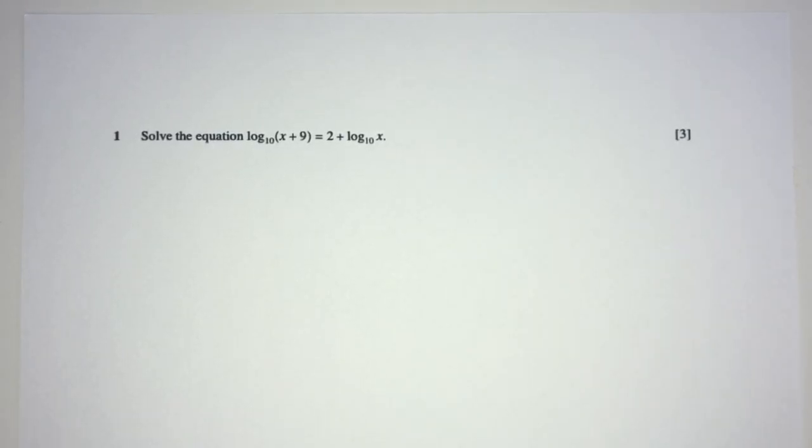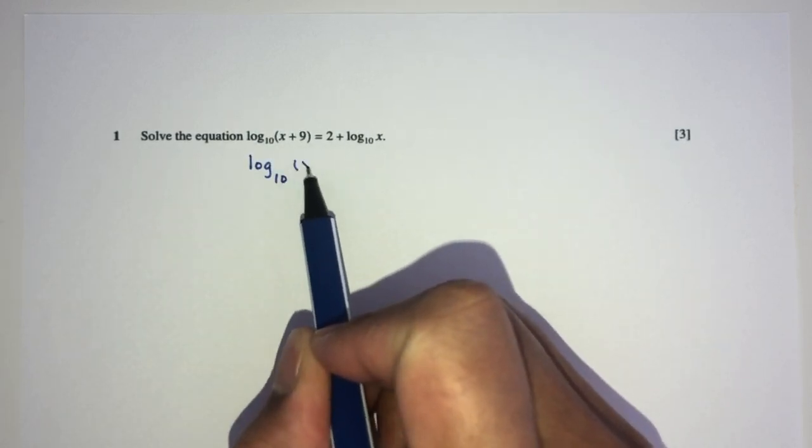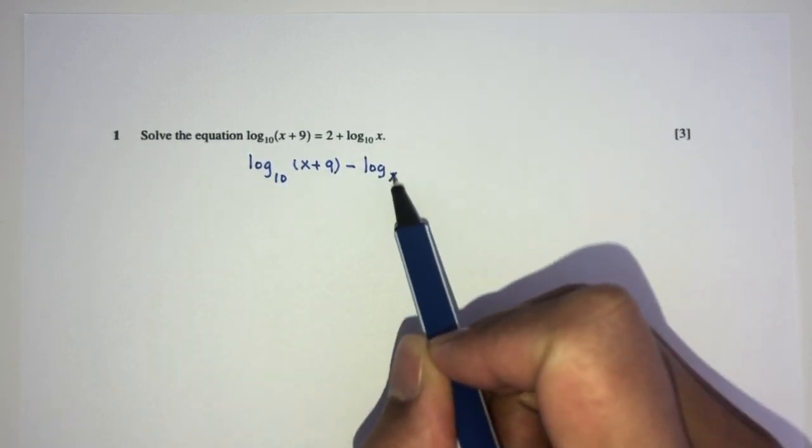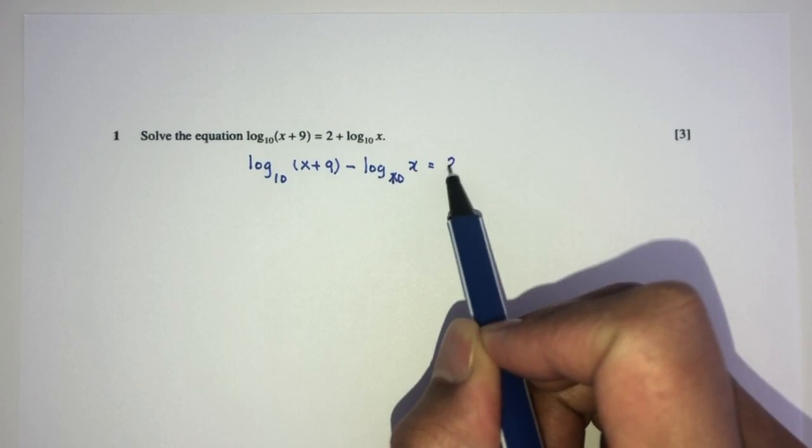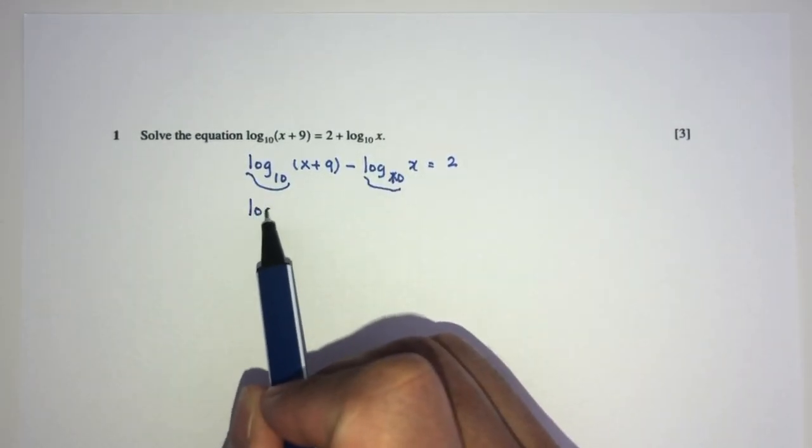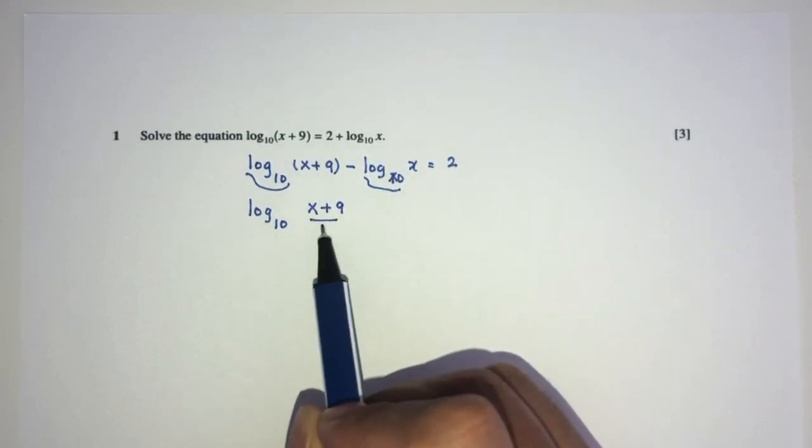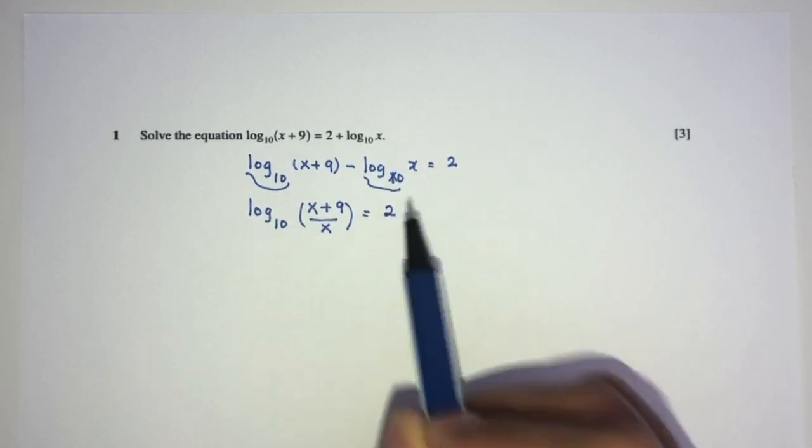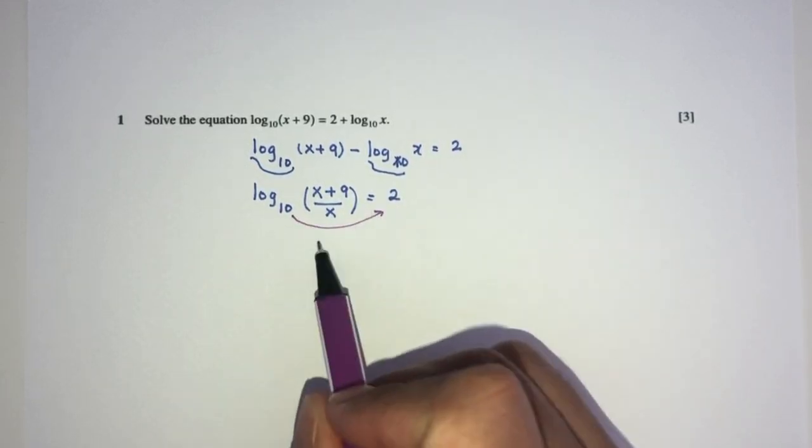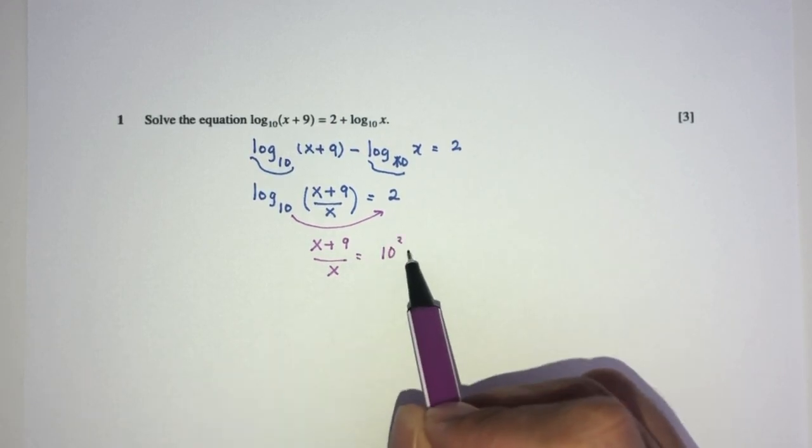So one by one, what can we do? First we can send all the logs to one side. You will have log base 10 of x plus 9 minus log base 10 of x equals 2. Now since these two are the same, we can combine them together. This will be x plus 9. Here we have minus becomes divide, equals 2. Now to find the value inside, send the base over here. You will have x plus 9 over x equals 10 to the power 2, which is 100.